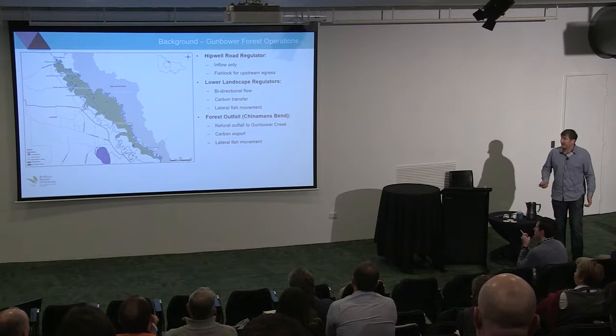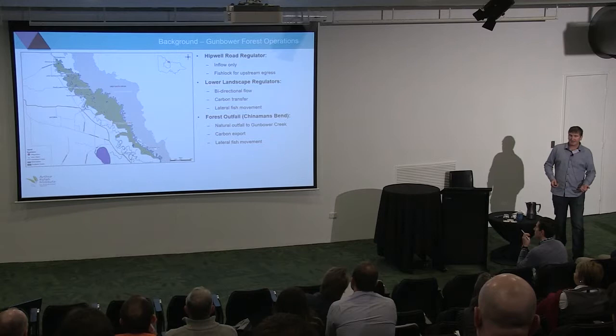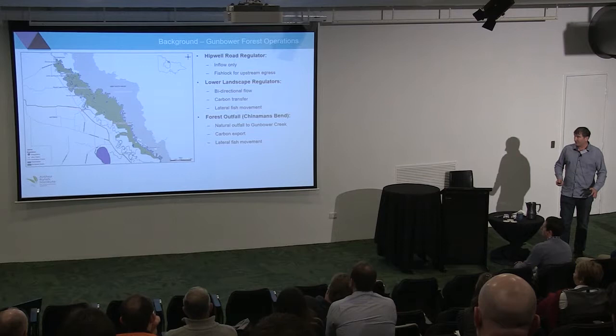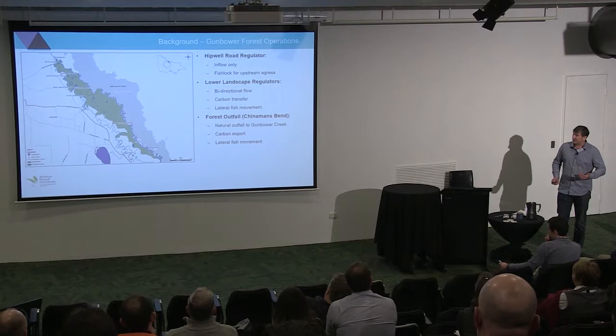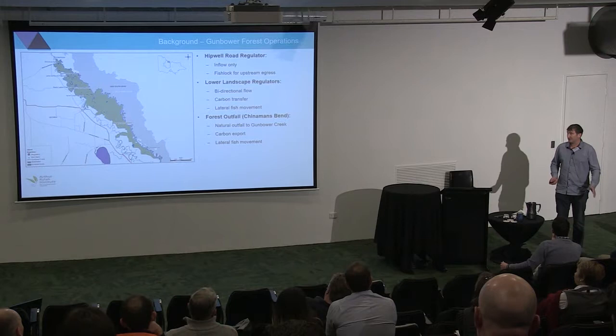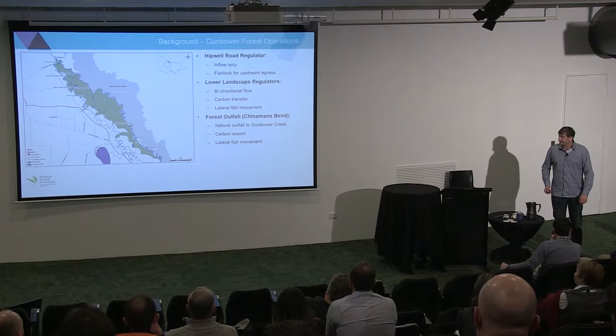The other important part is the natural forest outfall at Chinaman's Bend, right down the bottom end of the floodplain — it actually goes into Gunbower Creek. It's used for carbon export but there's no management regulator or structure here at all, so it has open fish movement either way without any option to stop the entry or exit of any fish. In essence, we can manage natural floods through the regulators, but a natural flood — as Charles just said — we have no control over. It just goes over the top of all those regulators.